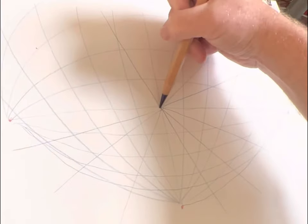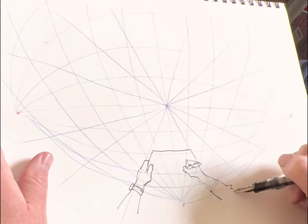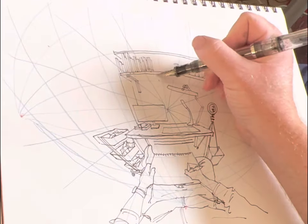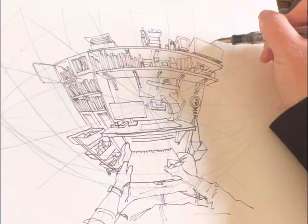After that, it's a process of sketching in the information from foreground to background, deliberately and with special attention paid to scale and location, using the grid as a cue for direction.